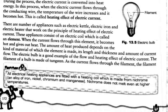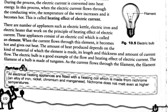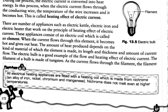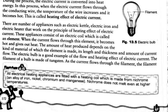There are a number of appliances such as electric kettle, electric iron, and electric heater that work on the principle of the heating effect of electric current. The heat produced by electric current may be useful in working of some appliances. But remember, in some other cases the heat produced may be wastage — it goes wasted into the environment.